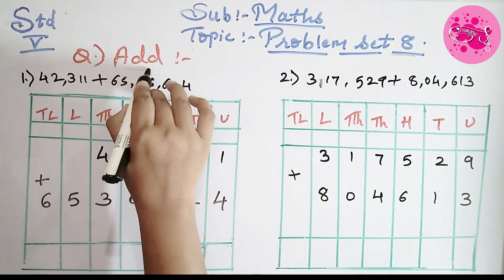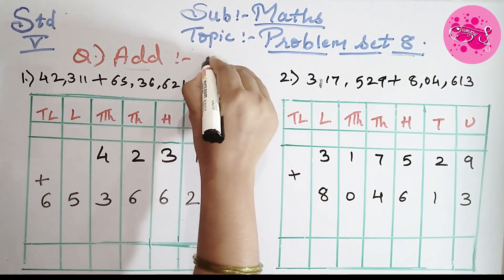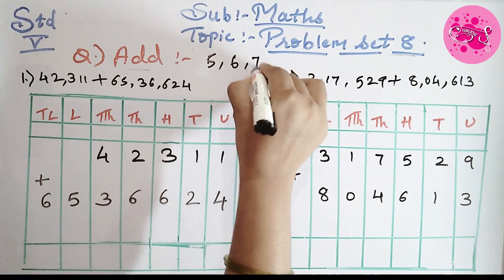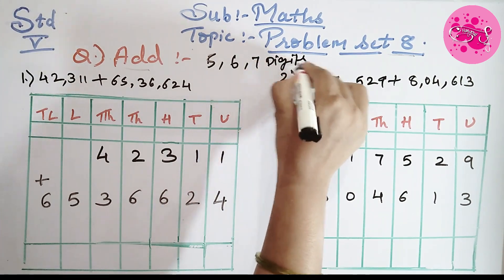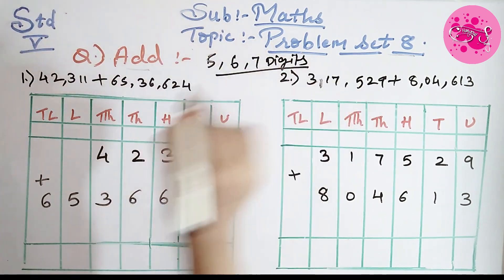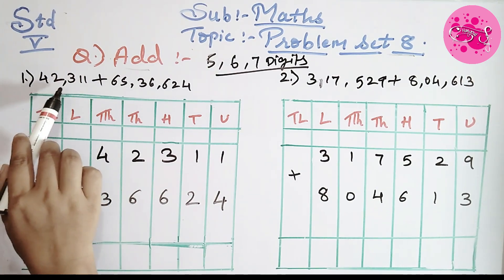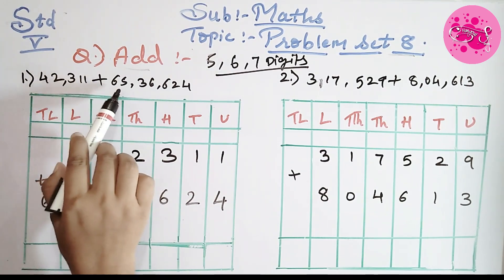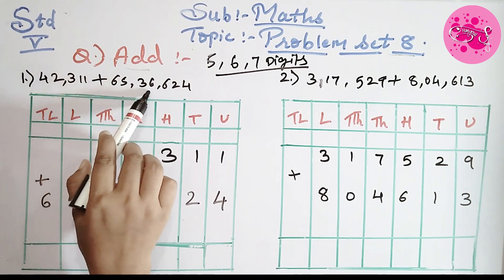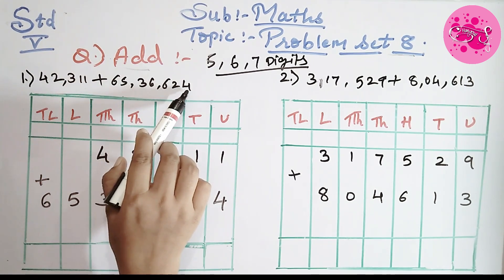Add. Here we have to do the addition of 5 digit, 6 digit and 7 digit numbers. So the first one, the number is 42,311 plus 65,36,624.